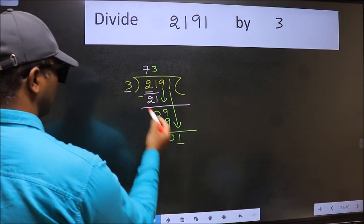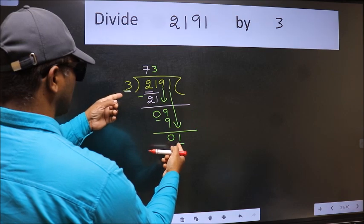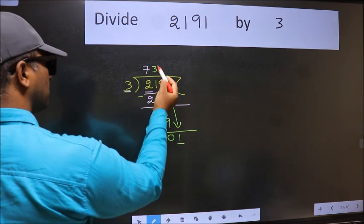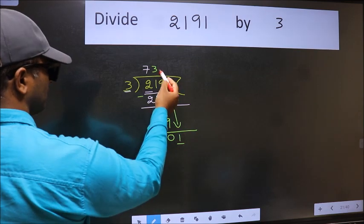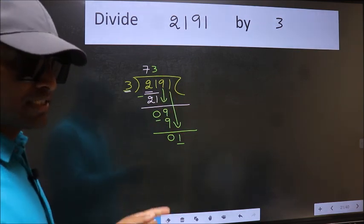Here we have 1 and here 3. 1 is smaller than 3. So what many do is, they directly put dot, take 0. Which is wrong. Why is it wrong?